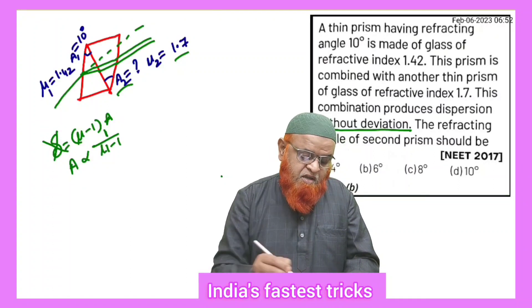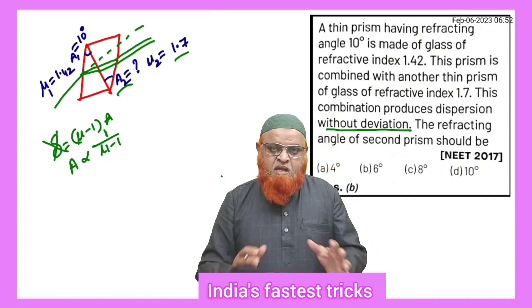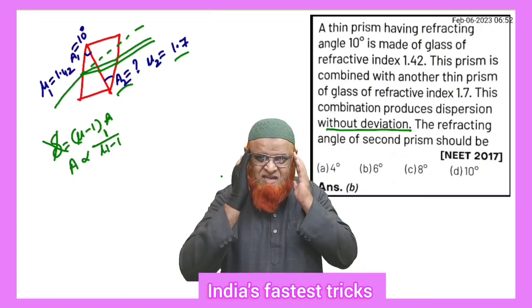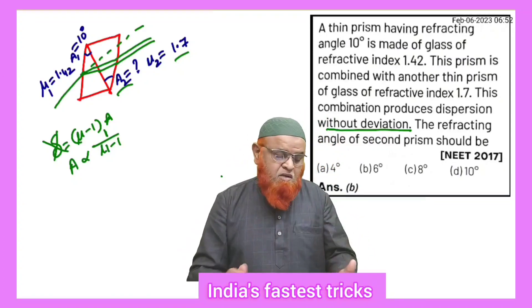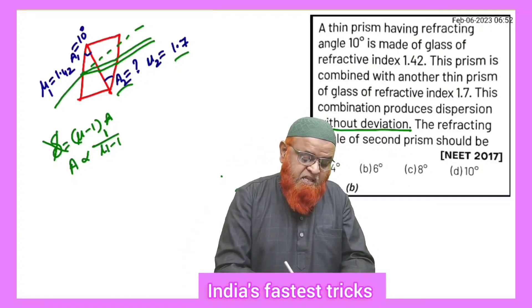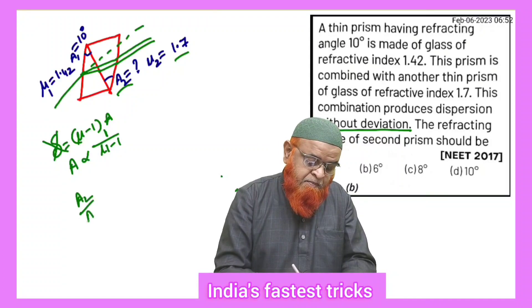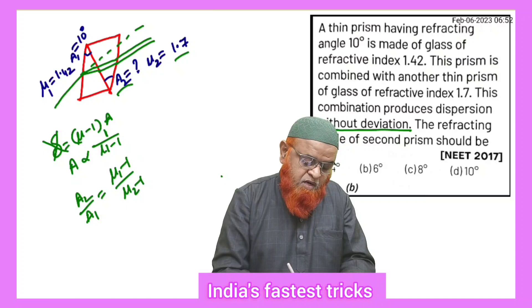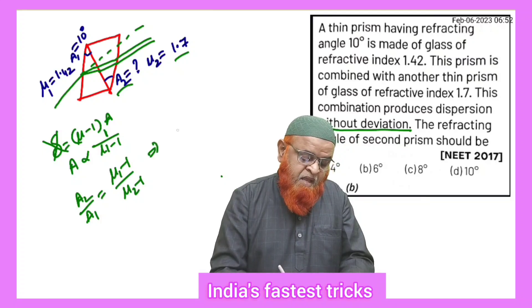This is the shortcut here. Instead of going through a lengthy process, just use this logical concept: A is inversely proportional to (mu minus 1). Therefore A2 by A1 equals (mu1 minus 1) by (mu2 minus 1).